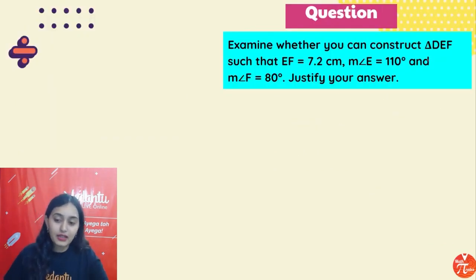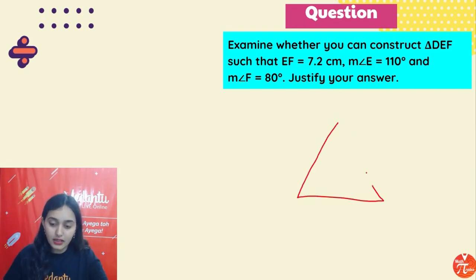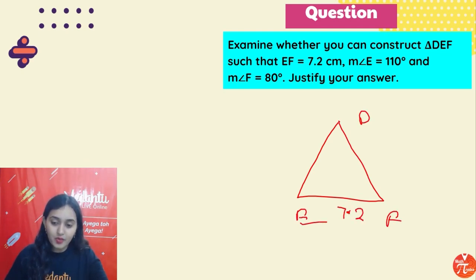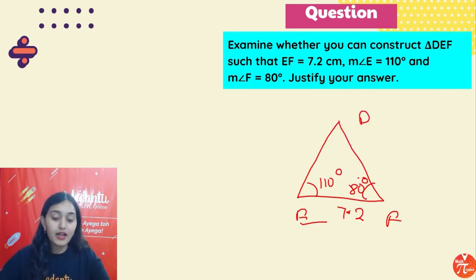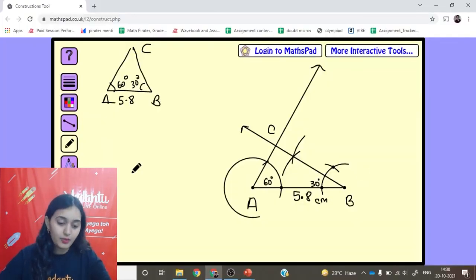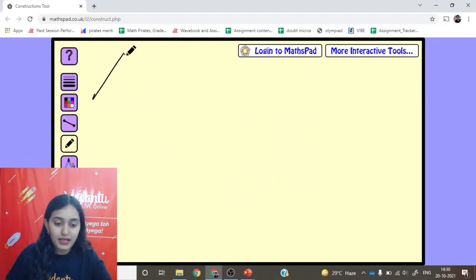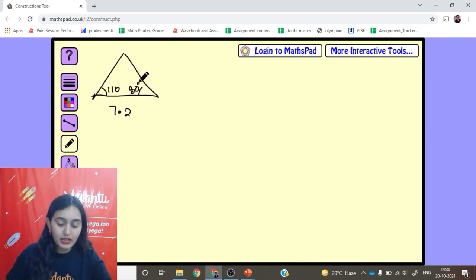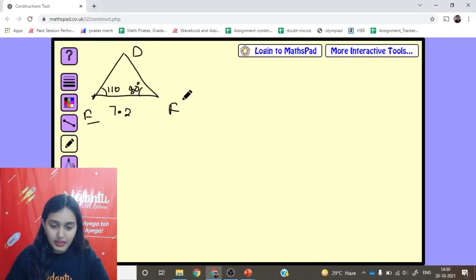One more question — let's construct triangle DEF where DF is 7.2 cm, angle E is between D and F, and the angles given are 110° and 80°. Let's draw the rough diagram: triangle DEF with side 7.2 cm and angles 110° and 80°.